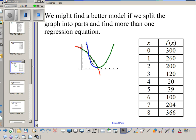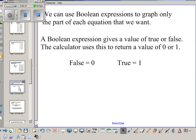To do that, we are going to use what's called a Boolean operator. Boolean expressions allow us to graph only a part of the equation that we want. Boolean expressions give a value of true or false. The calculator uses this to return a value of zero or one.